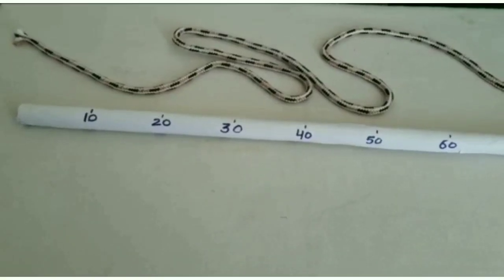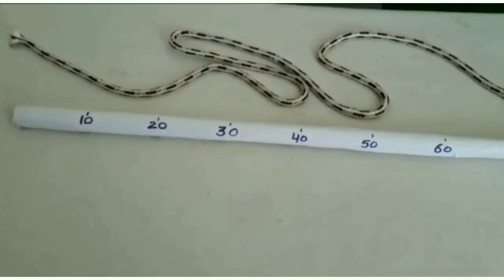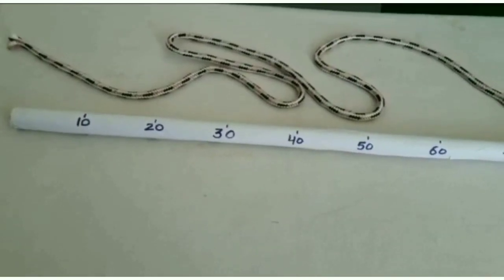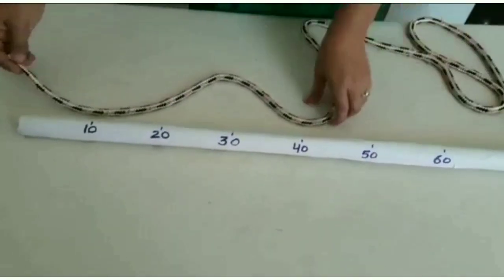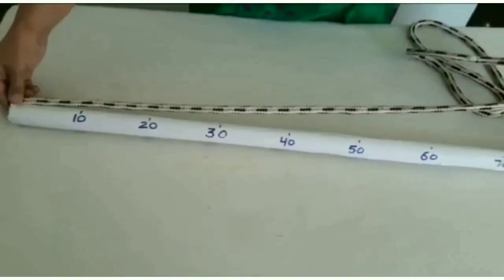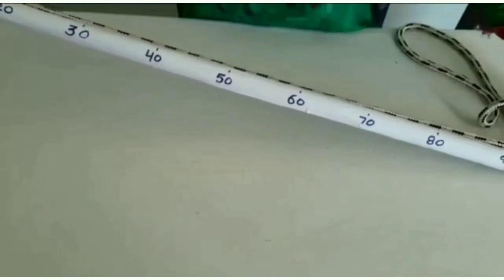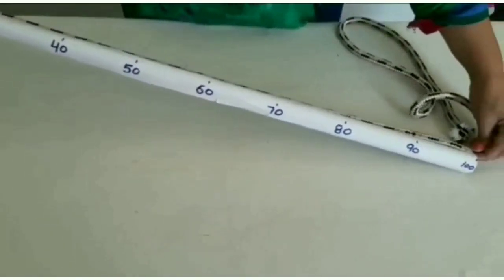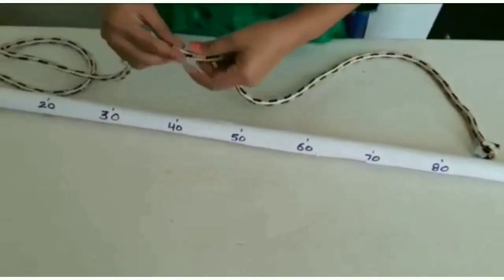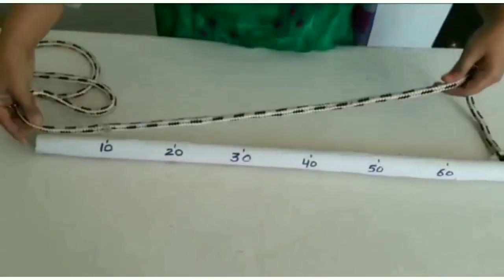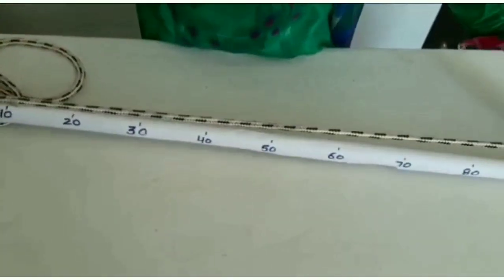Now we will measure the length of this rope with the help of meter rod. Let's see how long it is. We will start from the starting point. Yes, its length is one meter. Again put the remaining rope at the starting point. Yes, its length is two meters.